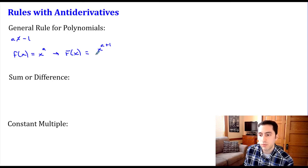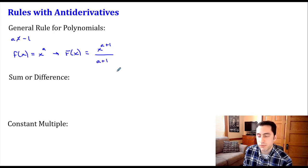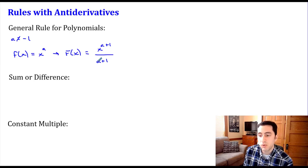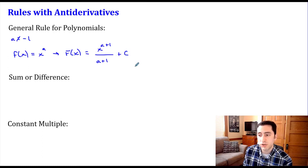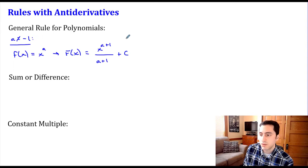We divide by (a + 1), so that (a + 1) in the denominator makes sure everything simplifies correctly, and we end up back at x to the a power if we take the derivative of capital F(x). As usual, we need to include our arbitrary constant C.